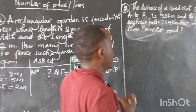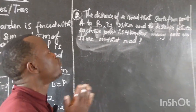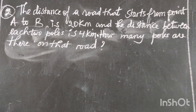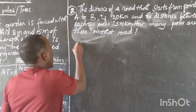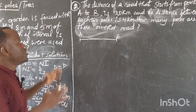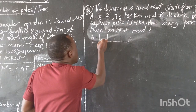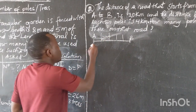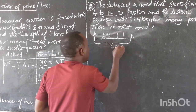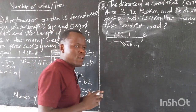The distance of a road that starts from point A to point B is 20 kilometers. The distance between each two poles is equal to 4 kilometers. How many poles are there on that road? This means we have a road from point A to point B, on which there are some poles, and they ask us to find how many poles there are.